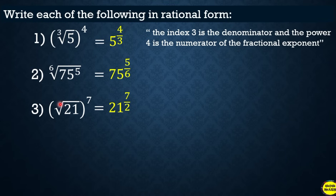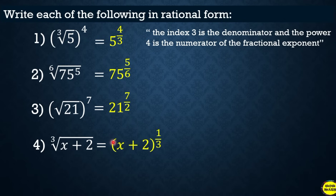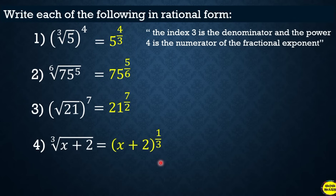Another example: the cube root of x plus 2. Since x and 2 are grouped together, they must stay enclosed in parentheses in exponential form. There is no written exponent, so it is understood to be 1 — making the numerator 1. The index is 3, making the denominator 3. Therefore the answer is the quantity of x plus 2, raised to 1 over 3.